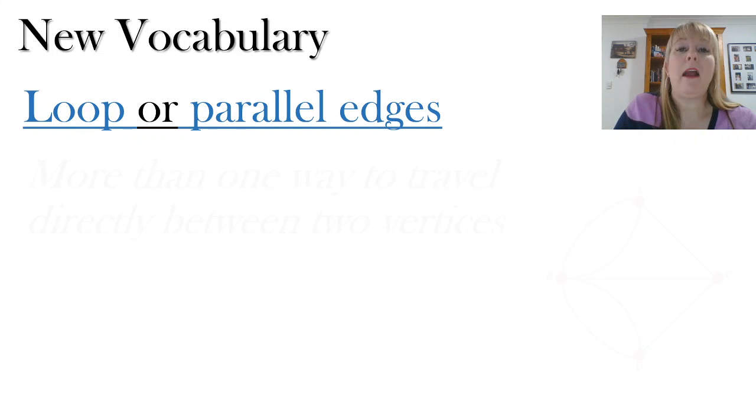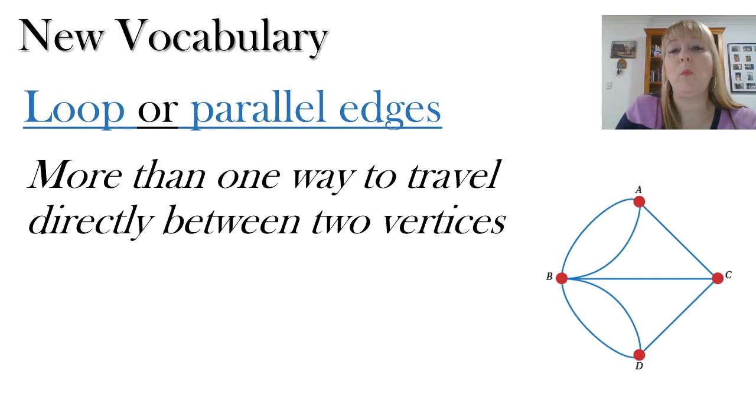We've talked a little bit about loops and parallel edges before. And this is more than one way to travel between two vertices. And we've got two loops in this diagram, one between A and B, and one between B and D.